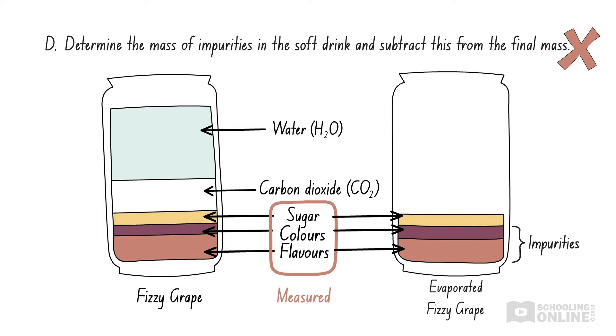However, this is related to the concept of accuracy, which is how close the measured value is to the true value. That is, how close the measured mass of sugar and impurities is to the true mass of the sugar without impurities. If you would like to revise this, please see our earlier video on accuracy in HSC chemistry skills. Therefore, option D is incorrect.